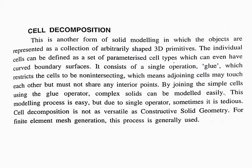First one: cell decomposition. This is another form of solid modeling in which the objects are represented as a collection of arbitrary shaped 3D primitives. P-section cells can be defined as a set of parametrized cell types which can even have carved boundary cells. One of the cells is defined as a parameterized cell type. It consists of a single operation — the glue operation — which restricts the cells to be non-intersecting, meaning adjoining cells may touch each other.